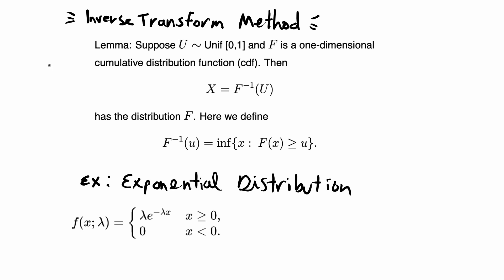In this video I'm going to go over a statistical technique called the inverse transform method. This is basically a method of generating non-uniform random variables with a desired distribution f. It's a pretty simple technique, but basically what it lets you do is create random variables that are not uniformly distributed and that have some desired distribution that you want. From there you can use this technique to randomly sample from that random variable that you generated.